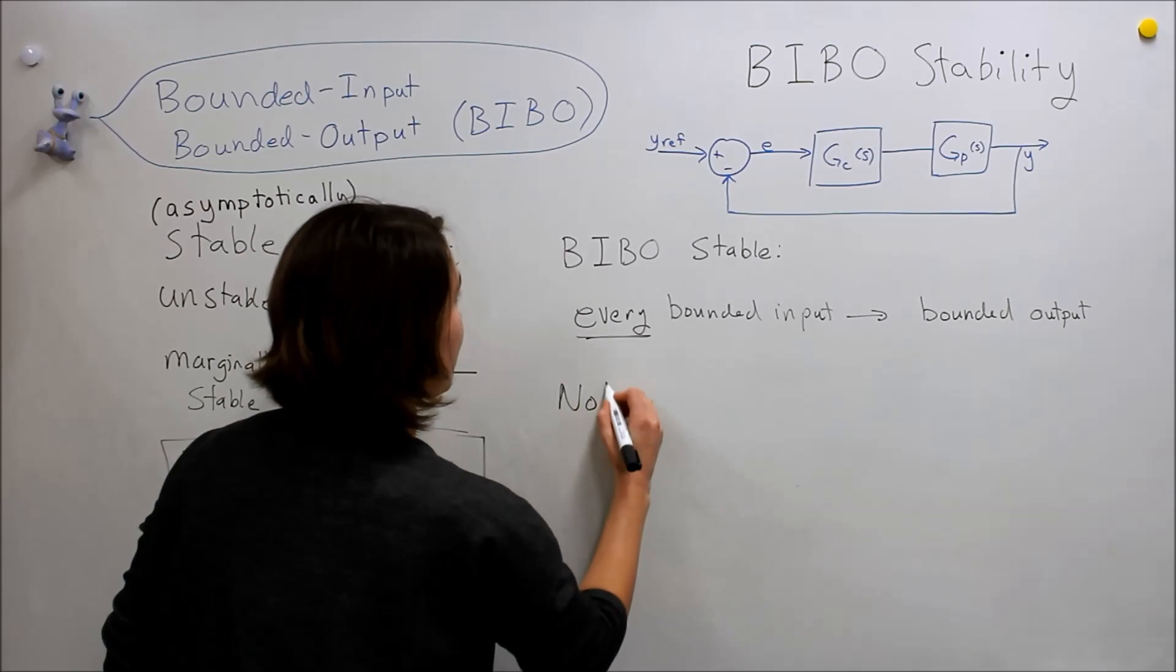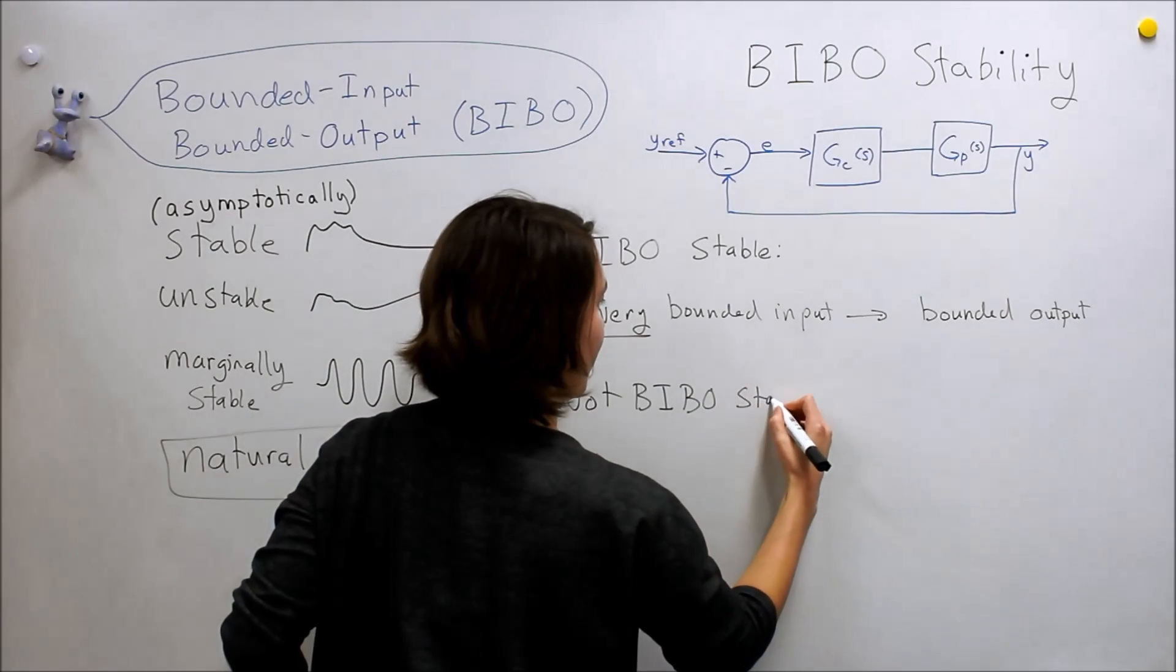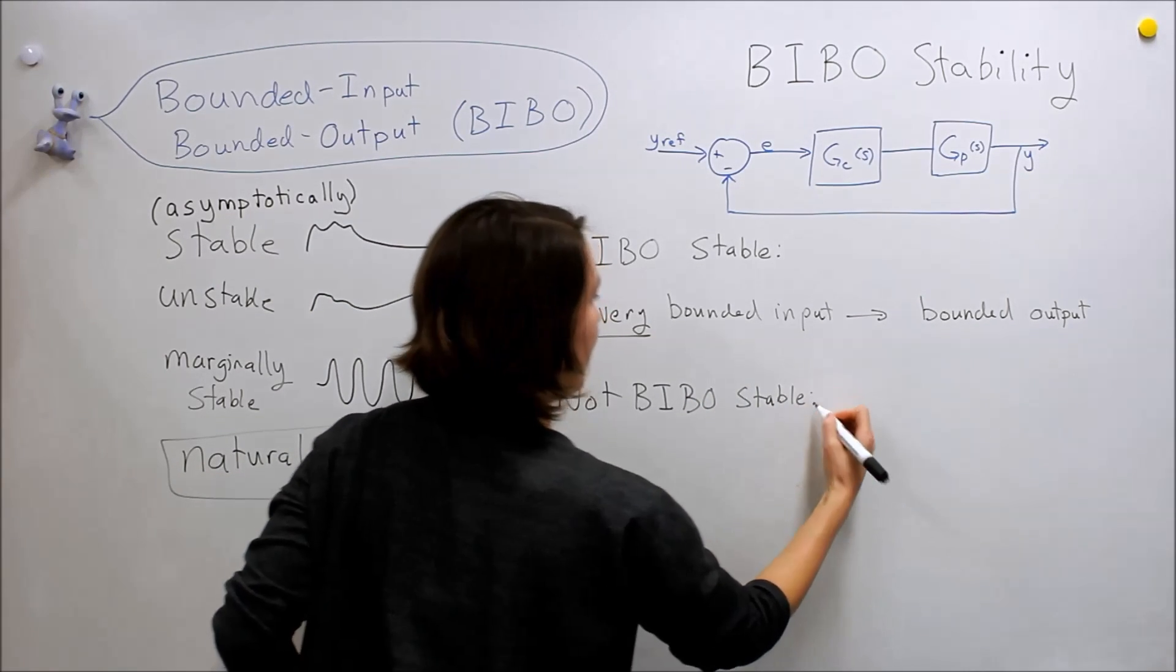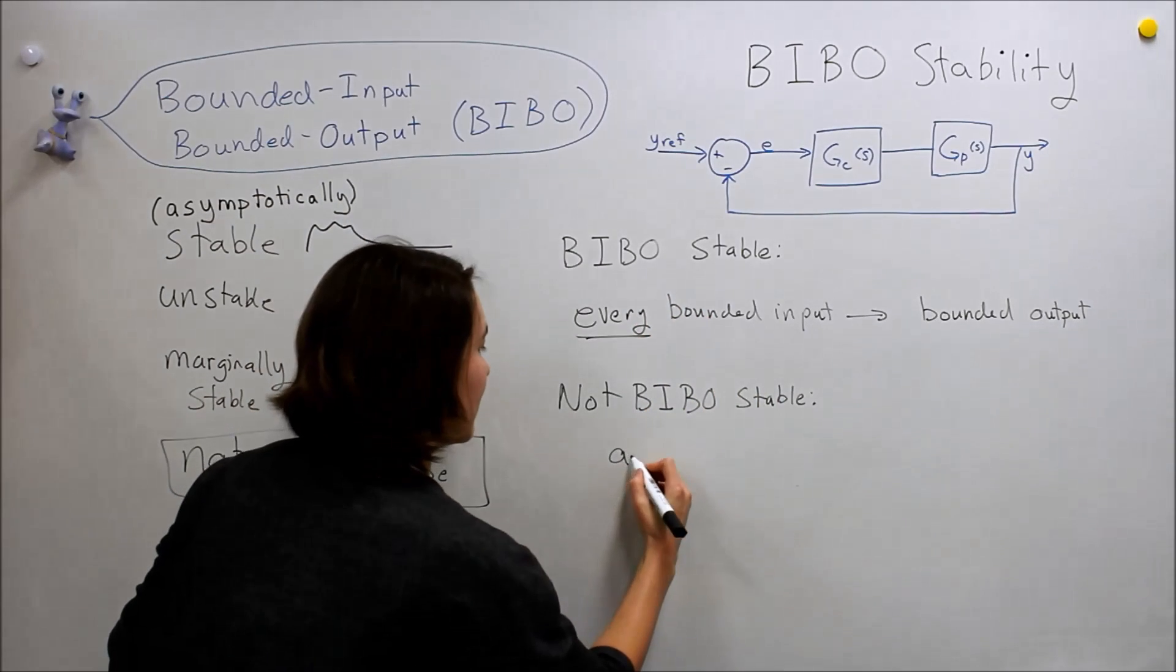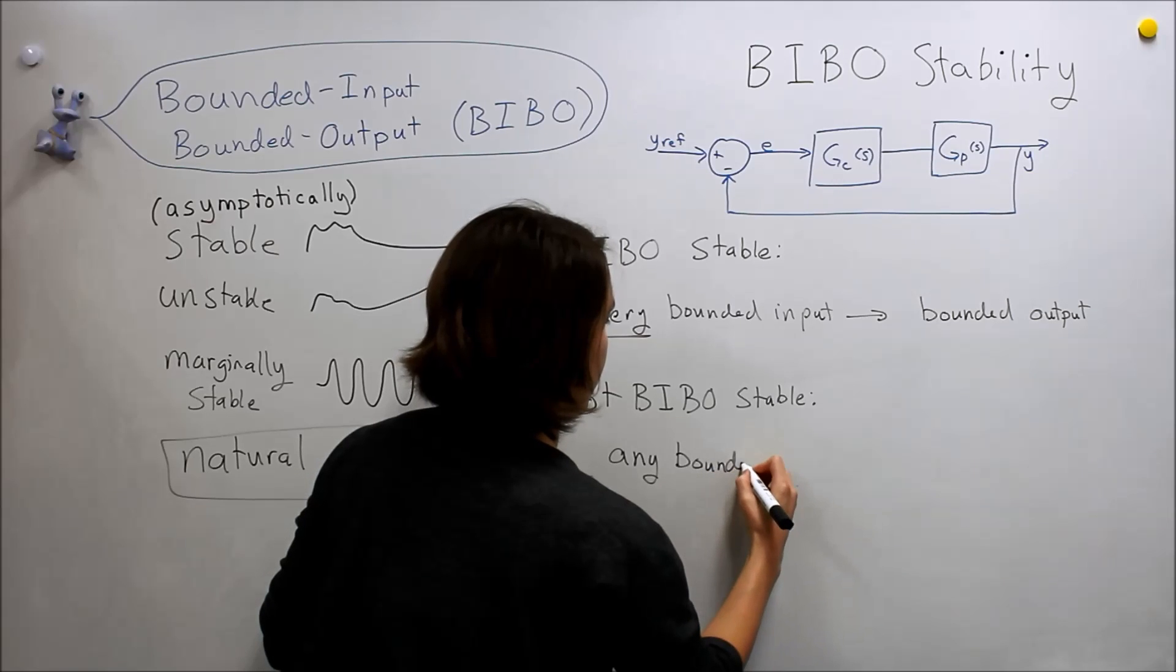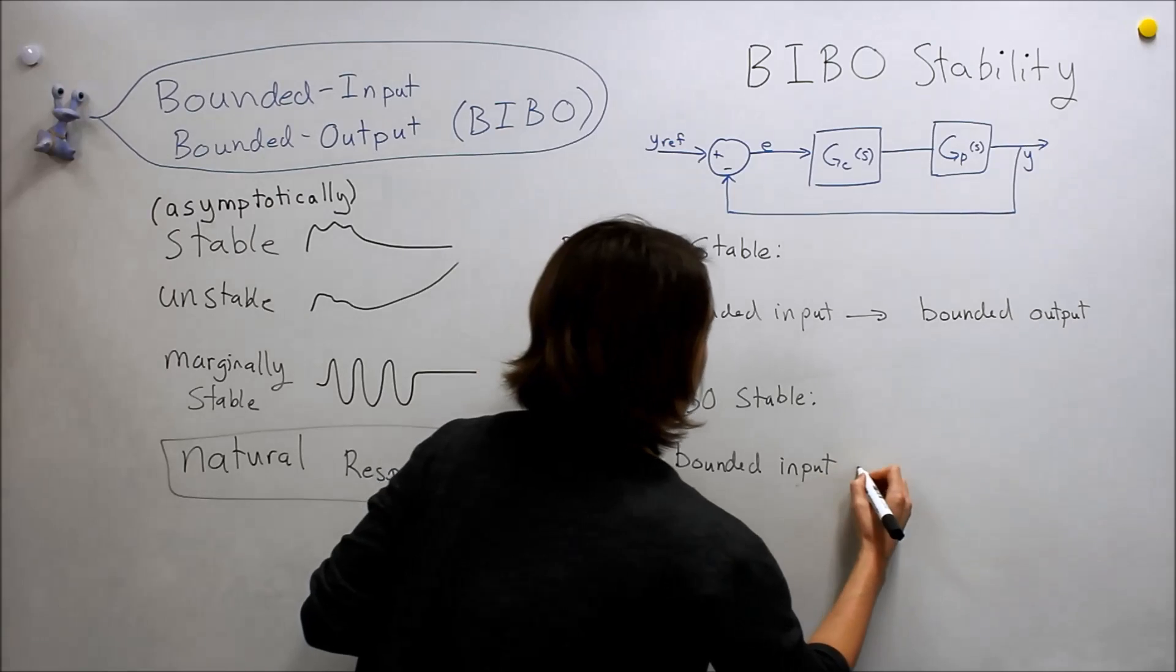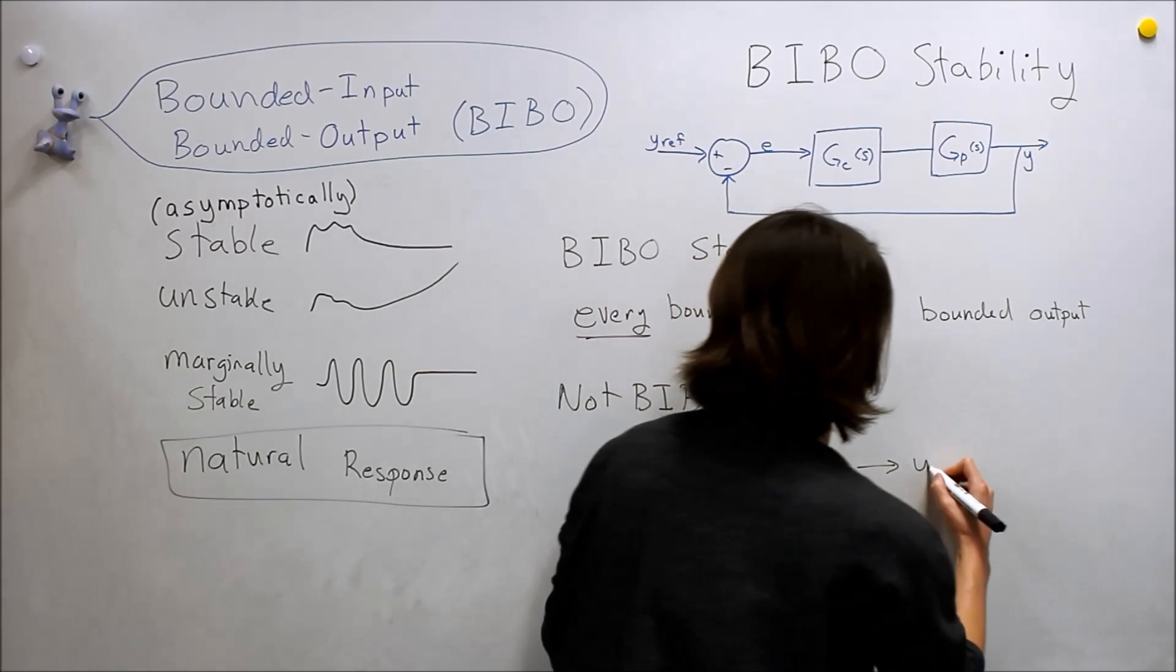And on the contrary, not BIBO stable means that there is some, any bounded input may result in an unbounded output.